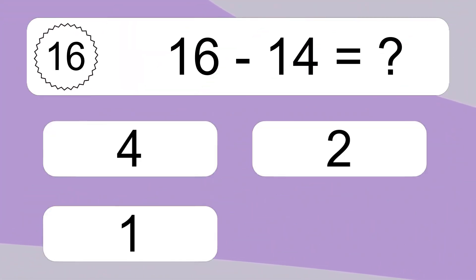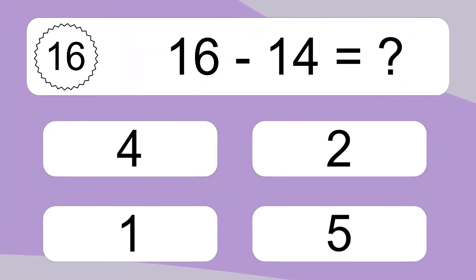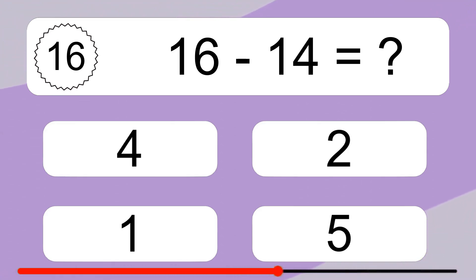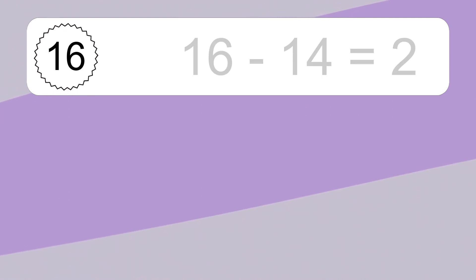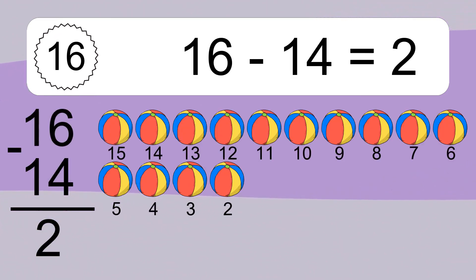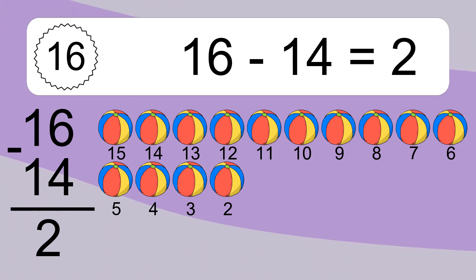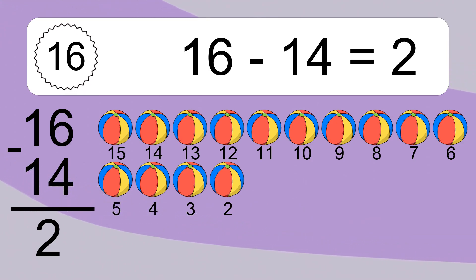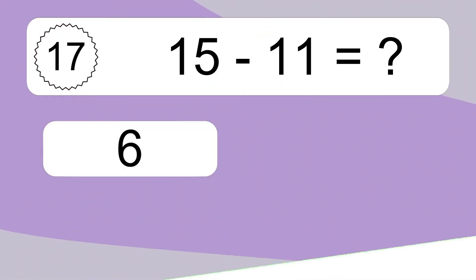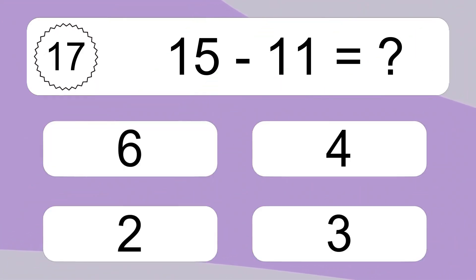16 minus 14 equals what? 16 minus 14 equals 2. Let's count it: 15, 14, 13, 12, 11, 10, 9, 8, 7, 6, 5, 4, 3, 2.